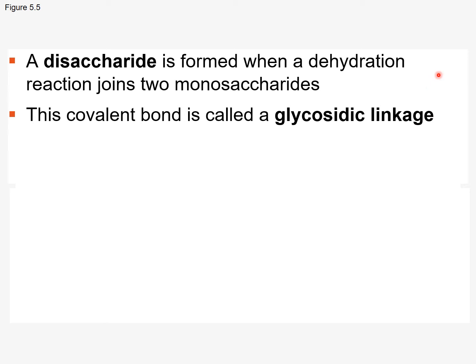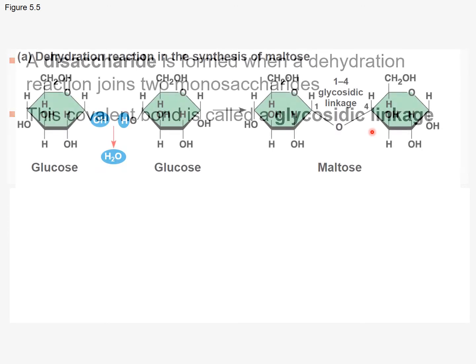Now let's look at some variations. A disaccharide — remember, a monosaccharide is a single unit, basically a simple sugar. A disaccharide is formed when a dehydration reaction results in a connection or bond between two monosaccharides. 'Di' means two, so now we have two monosaccharides connected together. When carbohydrates undergo dehydration synthesis, they create what's called a glycosidic bond or glycosidic linkage.